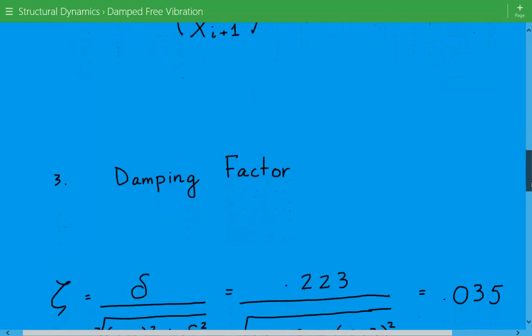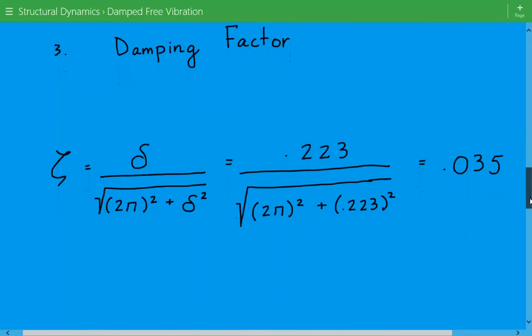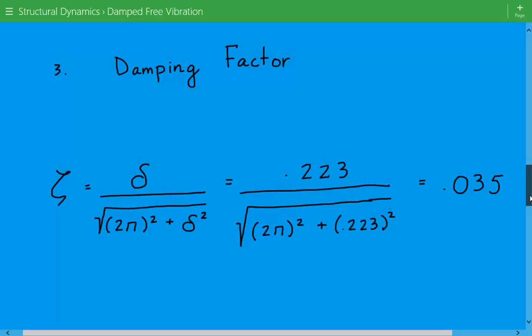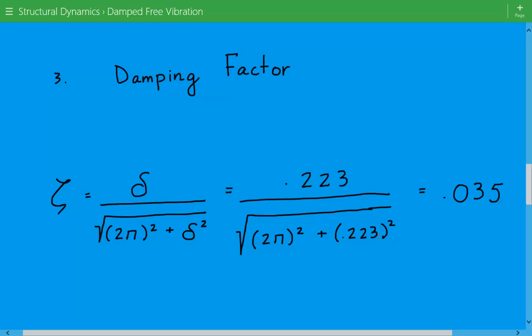And lastly, now we can calculate the damping factor. So the damping factor is equal to delta divided by the square root of 2 pi squared plus delta squared, so 0.223 divided by the square root of 2 pi squared plus 0.223 squared, and that's equal to 0.035.